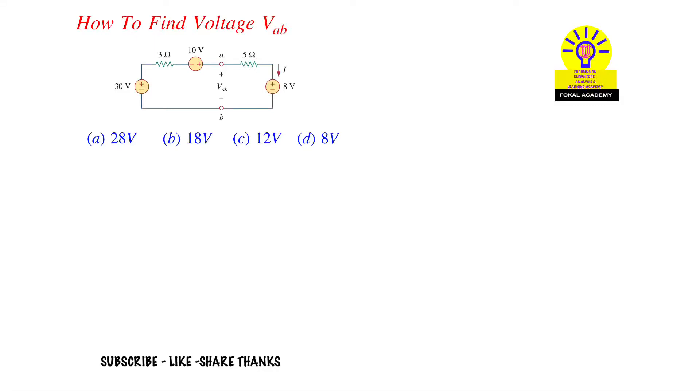Hi to everyone. Seeing this problem here, how to find voltage V_AB for the given circuit. Across A node and B node here we need to find voltage V_AB. First of all, we need to find current I in this given circuit.